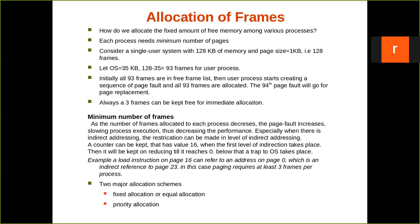Now imagine there are many users — for example, two user processes in a multi-program system. The operating system must decide how much frame to allocate to each process. As the number of frames allocated to each process decreases, page faults increase, which slows down process execution. Most time gets spent transferring data from secondary storage to main memory, decreasing overall system performance.